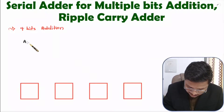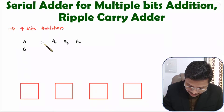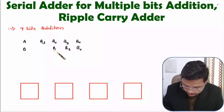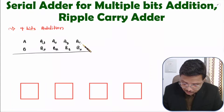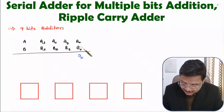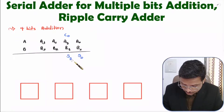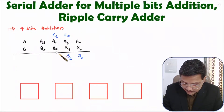To understand addition of 4 bits, I will be considering data A and B, each having a size of 4 bits. A has bits A0, A1, A2, and A3, and B has bits B0, B1, B2, and B3. Now, to perform addition, first you add A0 and B0. The output is S0 and this generates carry C0, which is given to the next stage. Next, you perform addition of A1, B1, and C0, which results in S1 and generates carry C1.